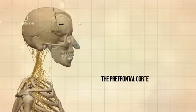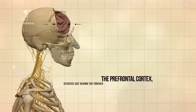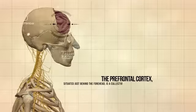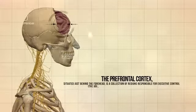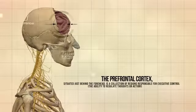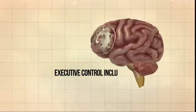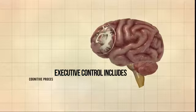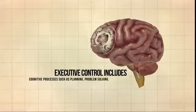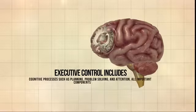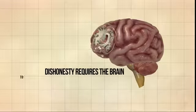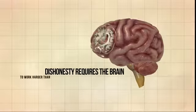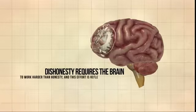The prefrontal cortex, situated just behind the forehead, is a collection of regions responsible for executive control — the ability to regulate thoughts or actions to achieve goals. Executive control includes cognitive processes such as planning, problem solving, and attention, all important components of deception. Dishonesty requires the brain to work harder than honesty, and this effort is reflected by increased brain activity.